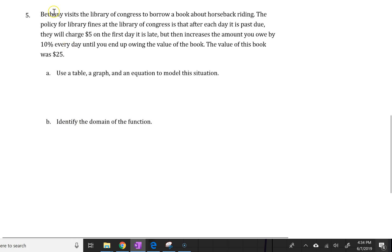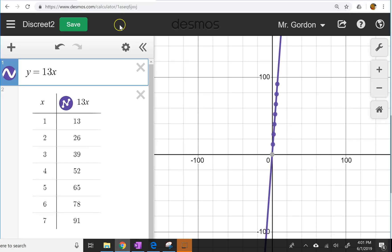So now we can look at problem five. The policy for the library charges at the Library of Congress is after each day it is passed due, they will charge five dollars. For the first day it's late, and then increase the amount you owe by 10% every day until you end up owing the value of the book, and the value of this book is twenty-five dollars. So we have a scenario where on the first day that it's late, it's going to be five dollars.